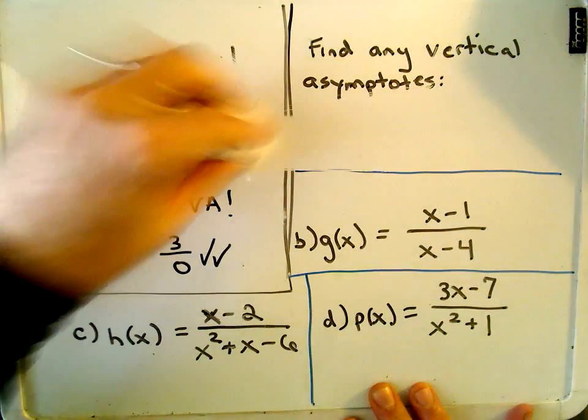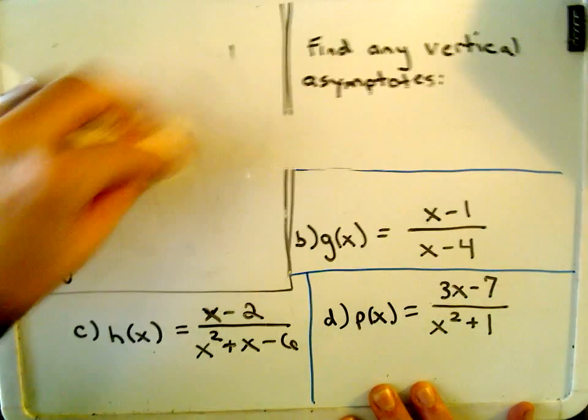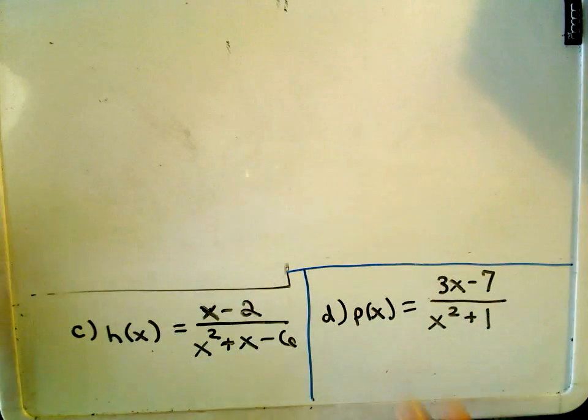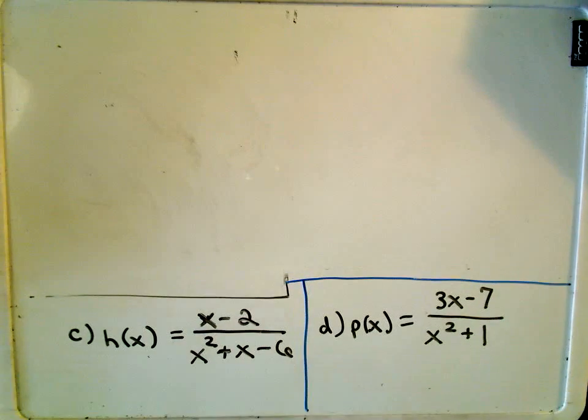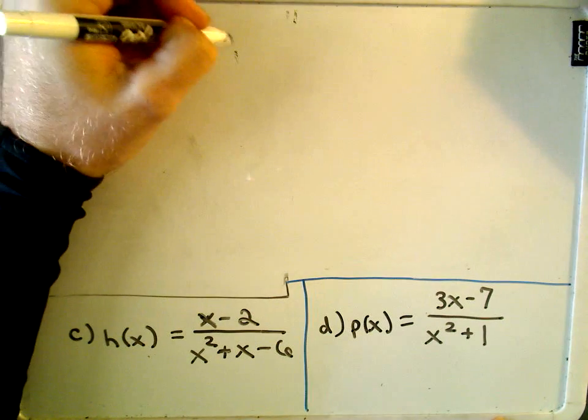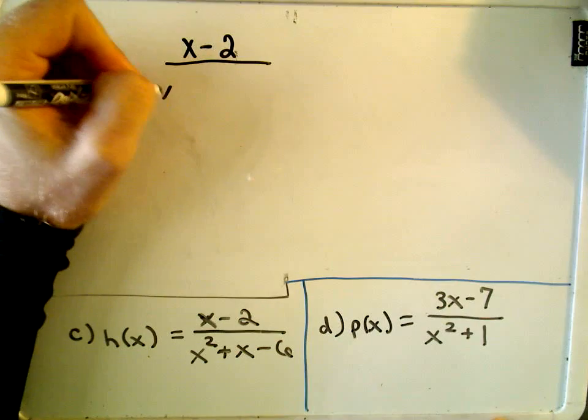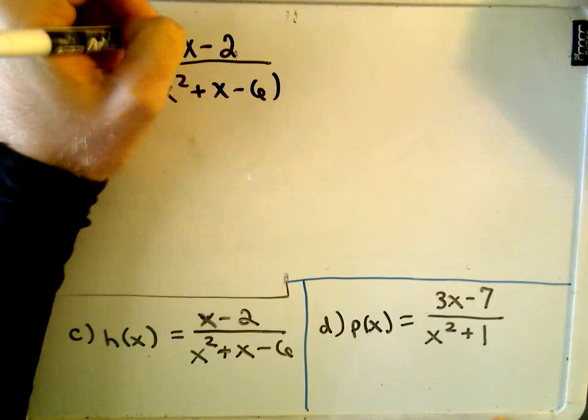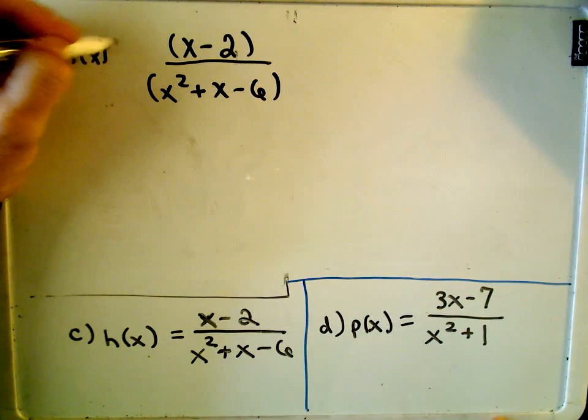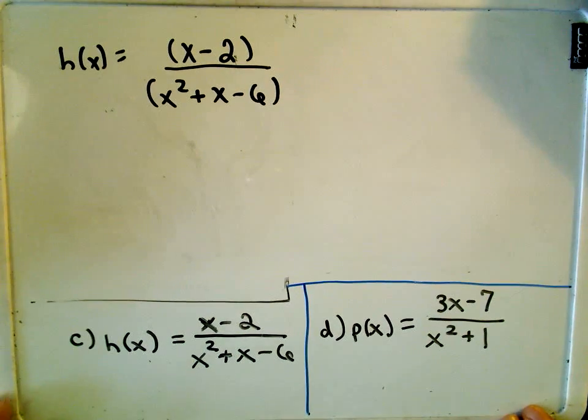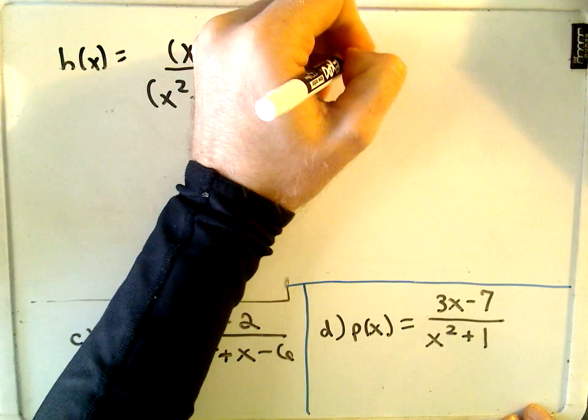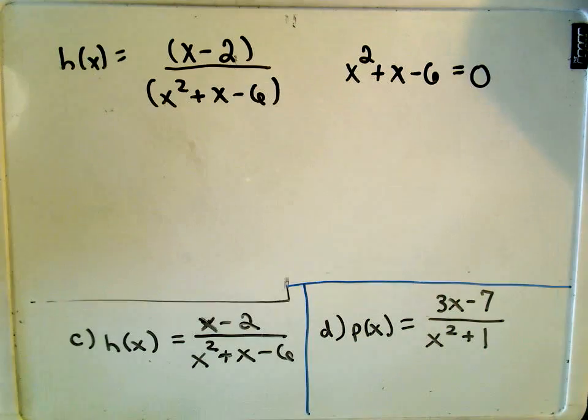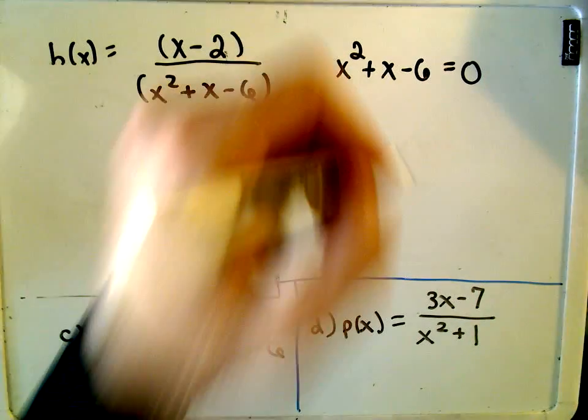Okay, so let's go to part C here. Okay, same thing. We've got x minus 2 over x squared plus x minus 6. Same thing, I'm just going to set the denominator equal to 0 and try to solve that equation. So x squared plus x minus 6. Well, again, this is a quadratic. We could use the quadratic formula. I think this factors.